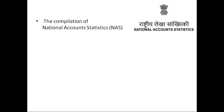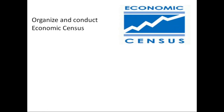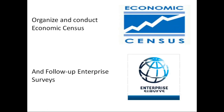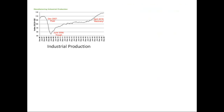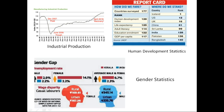Functions of the Central Statistical Organization include the compilation of National Account Statistics, conduct of the Annual Survey of Industries, organization and conduct of the Economic Census and follow-up enterprise surveys, and compilation of industrial production, human development statistics, and gender statistics.